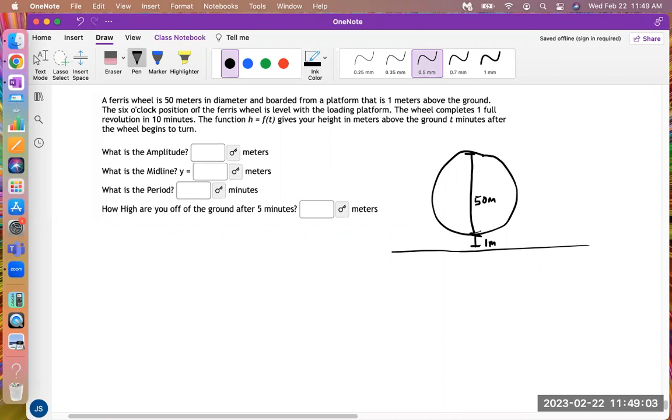And the 6 o'clock position is level with the loading platform. So that is, this is like a clock one or 12 o'clock, one, two, three, four, five, and six. It'd be down at the bottom.